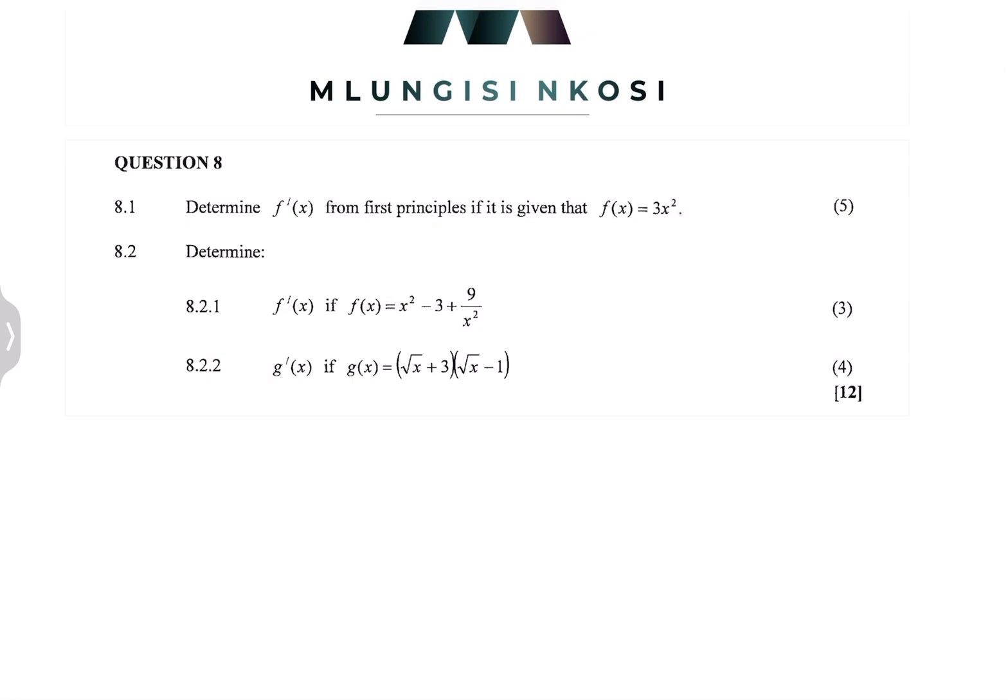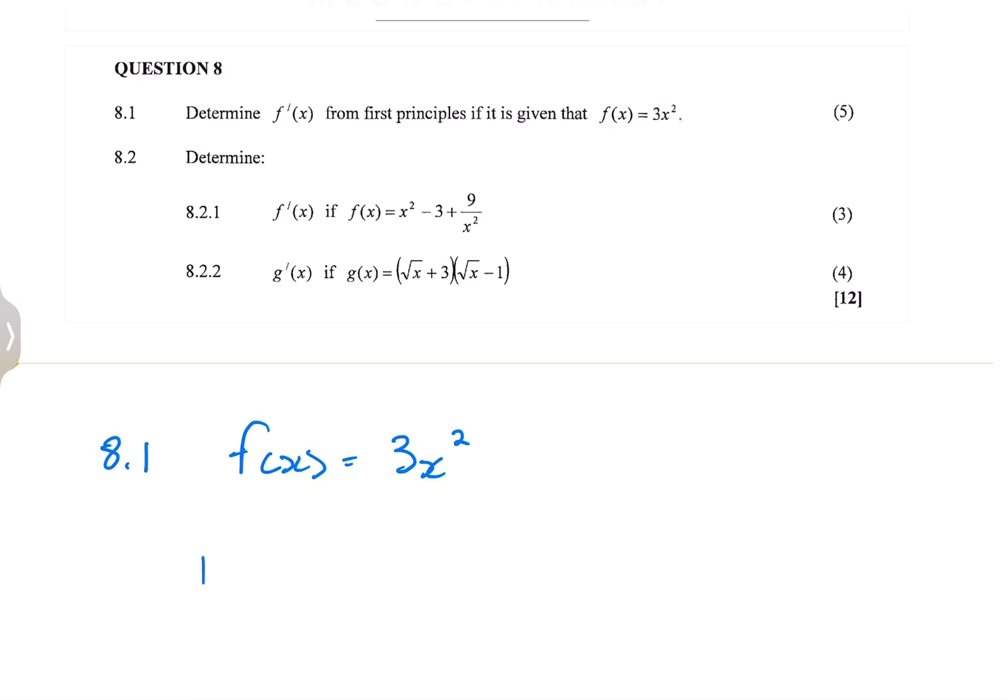First of all, they say to us, determine f prime x from first principles if it is given that f(x) is 3x squared. Now remember, anytime that they tell us about first principles, we're finding the derivative using first principles in this case. So we know that f(x) is 3x squared. The formula that we always use is f prime x, which is going to be the limit as h tends to 0 of f(x+h) minus f(x) divided by h.